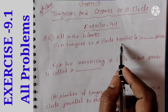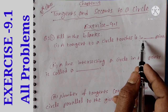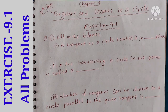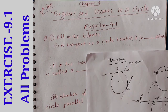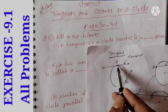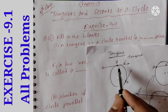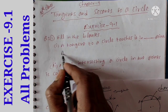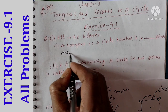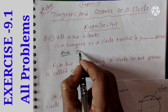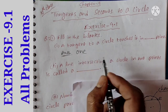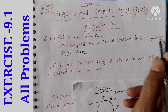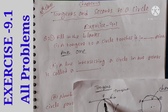A tangent to a circle touches it in dash point. What is the tangent? It touches at only one point. So what is the answer? The answer is one. A tangent to a circle touches it in one point.